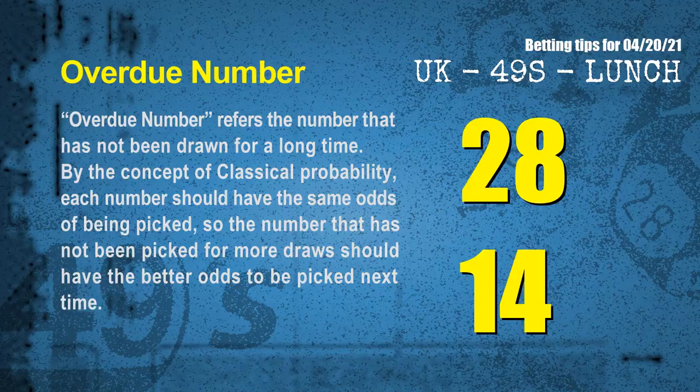The final information for you is overdue numbers. An overdue number refers to a number that has not been drawn for a long time. Also by the concept of classical probability, the number that has not been picked for more draws should have better odds to be picked next time. After counting thousands of results, we find out the most overdue two numbers are 28 and 14.